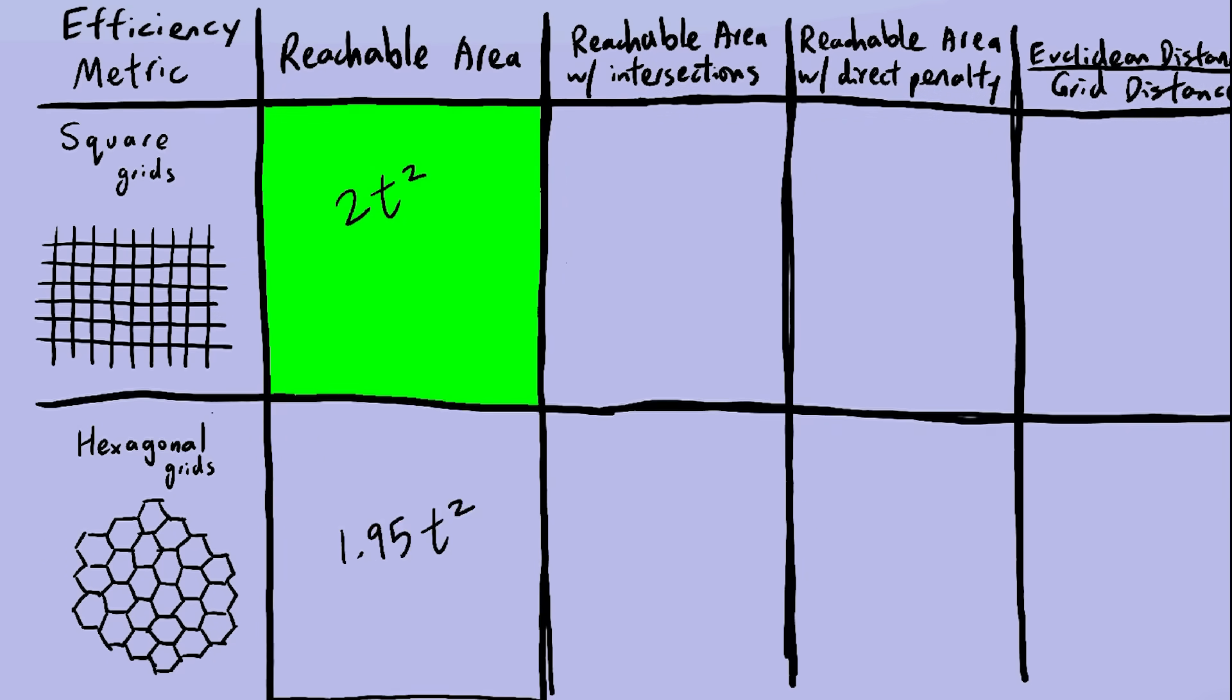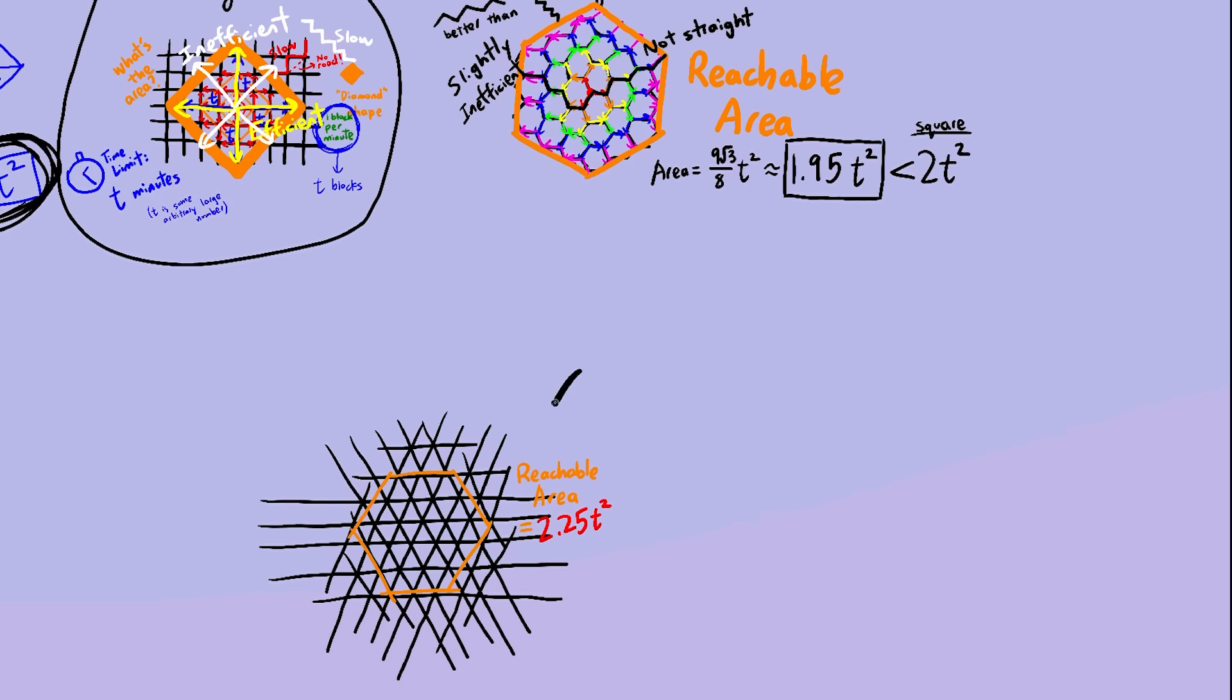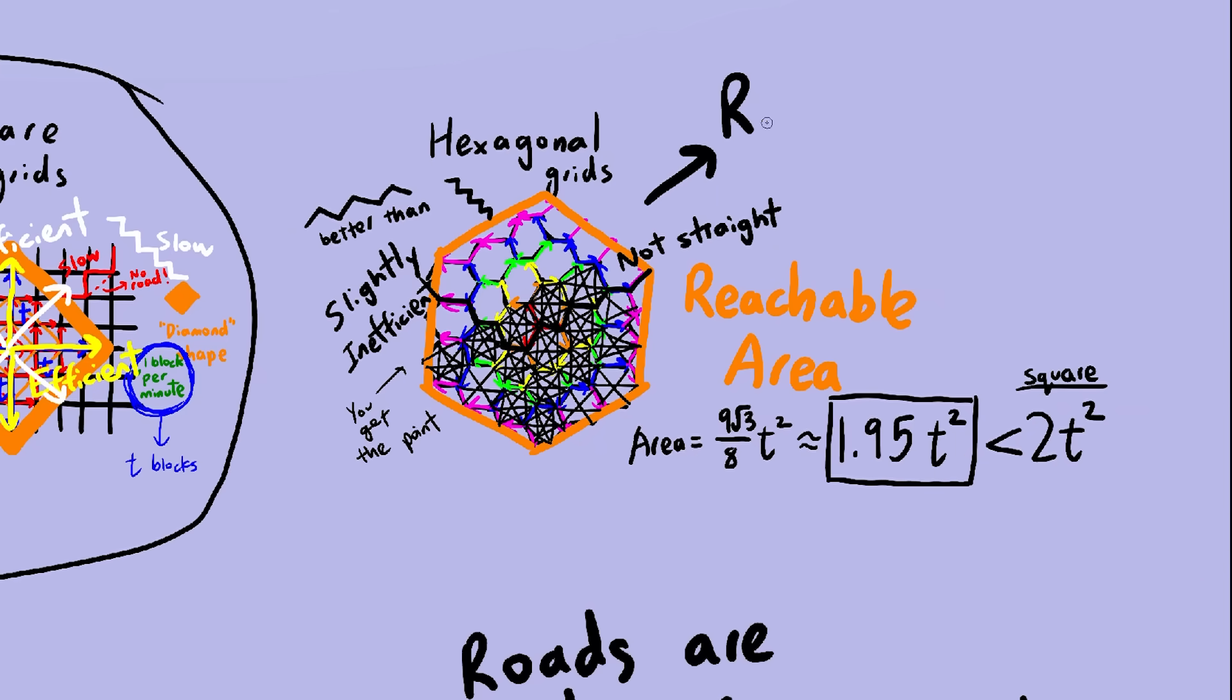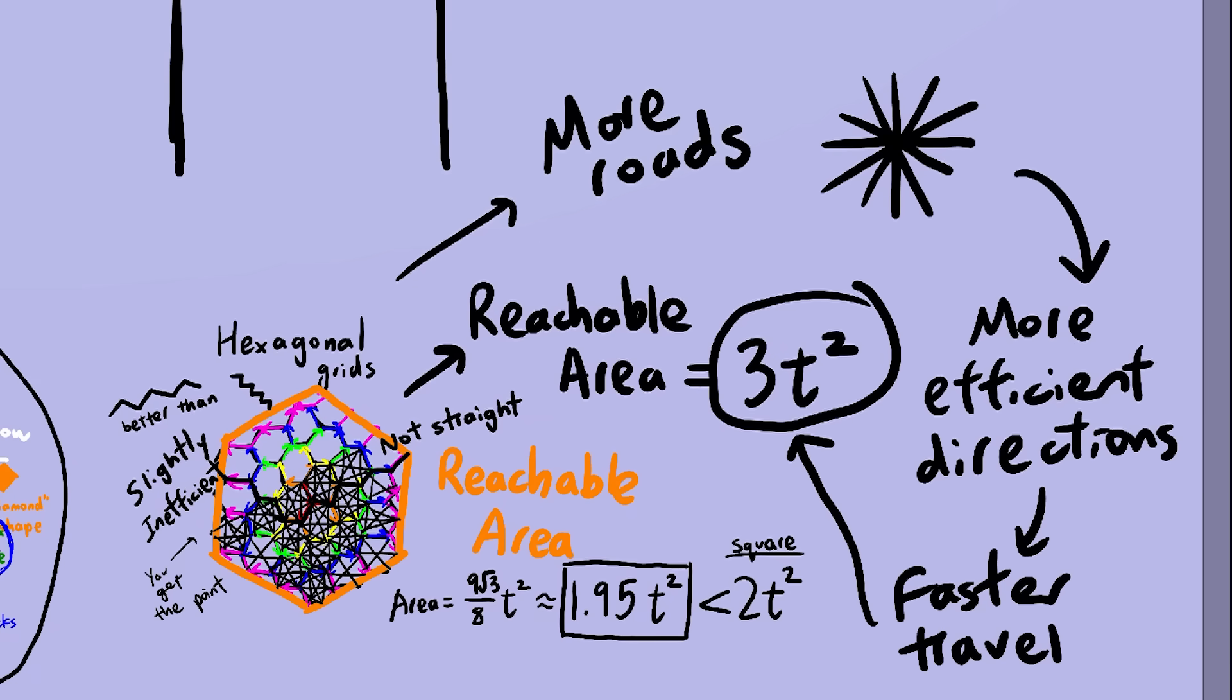Now, this has nothing to do with real life, because this is not a great way to measure efficiency. For instance, triangular grids have an even bigger reachable area, but that's only because there are more roads in a triangular grid than there are in a square or hexagonal grid. In fact, if you add a bunch of roads to the hexagonal grid, all of a sudden it's the most efficient. Wow, wonder what happened there. It's almost like more roads means more ways to travel around, leading to a bigger reachable area.